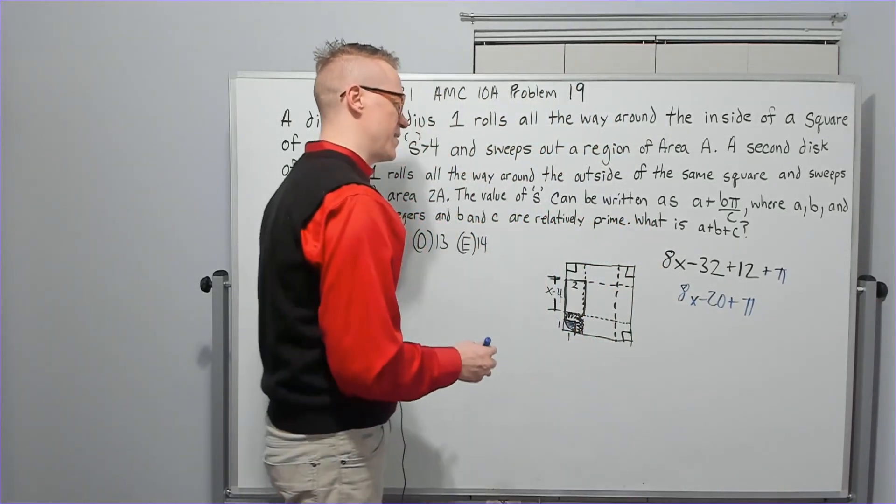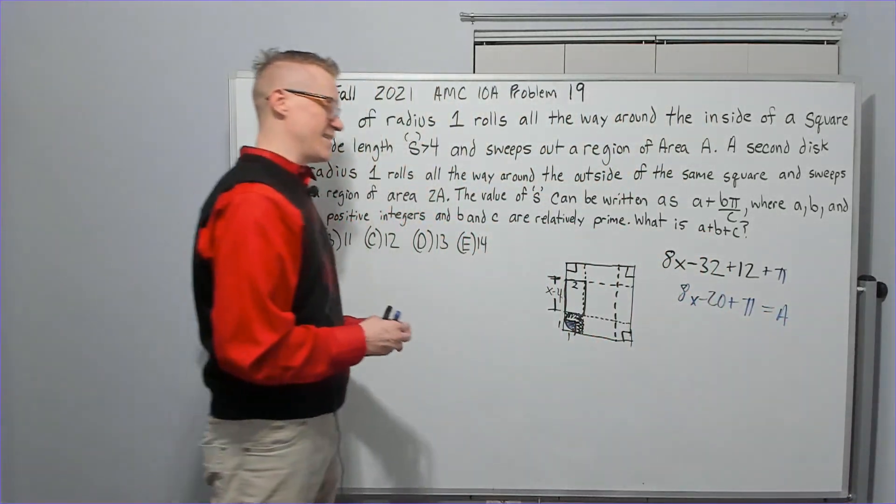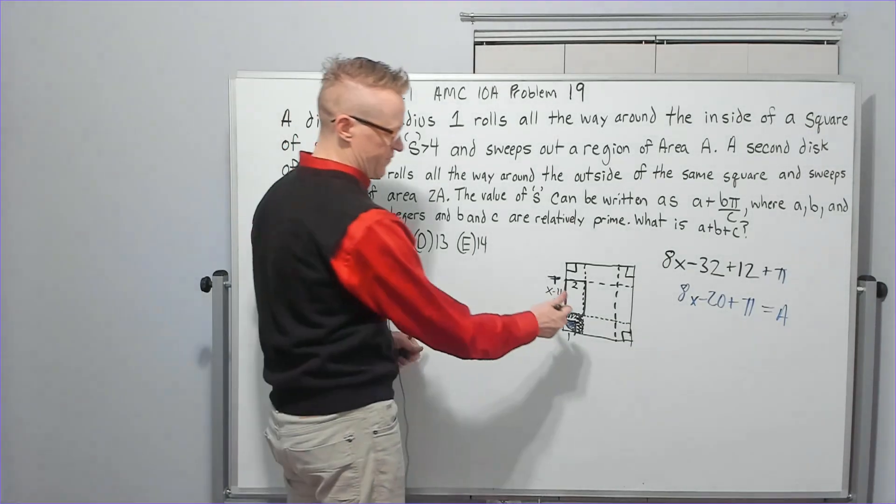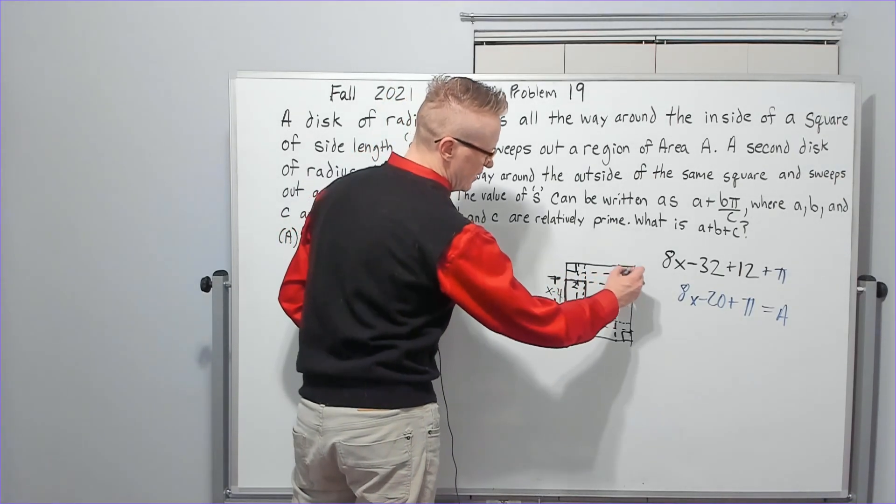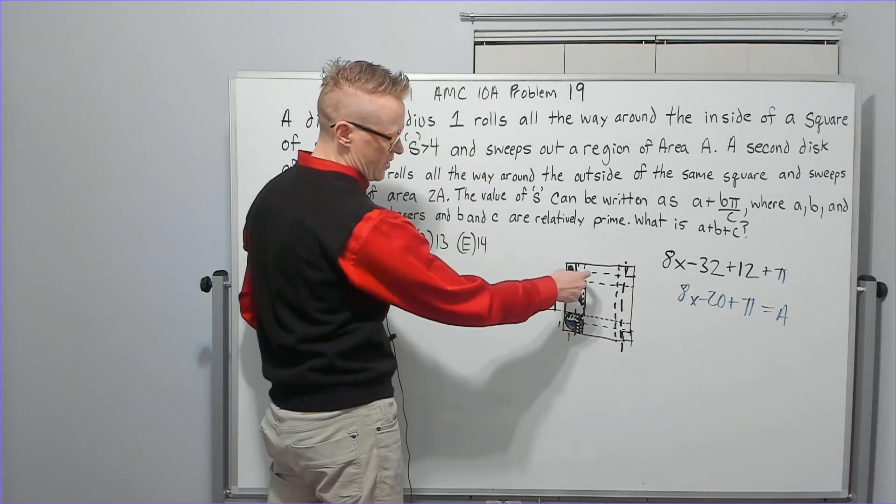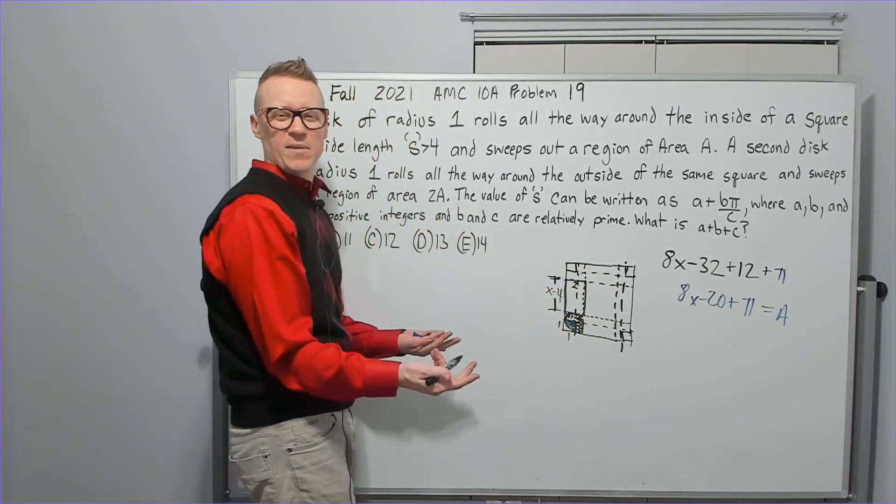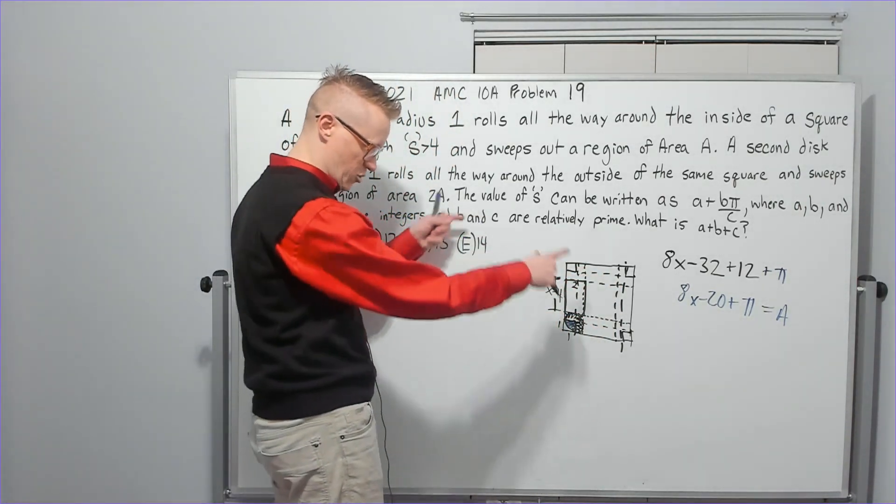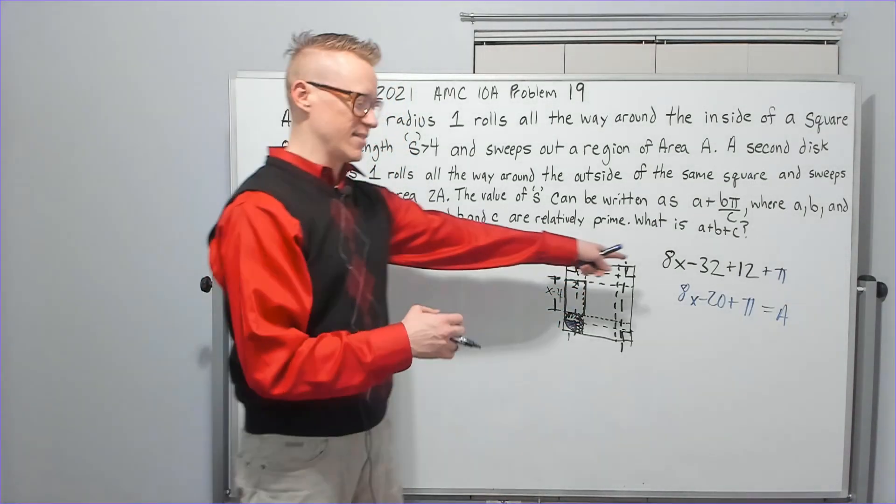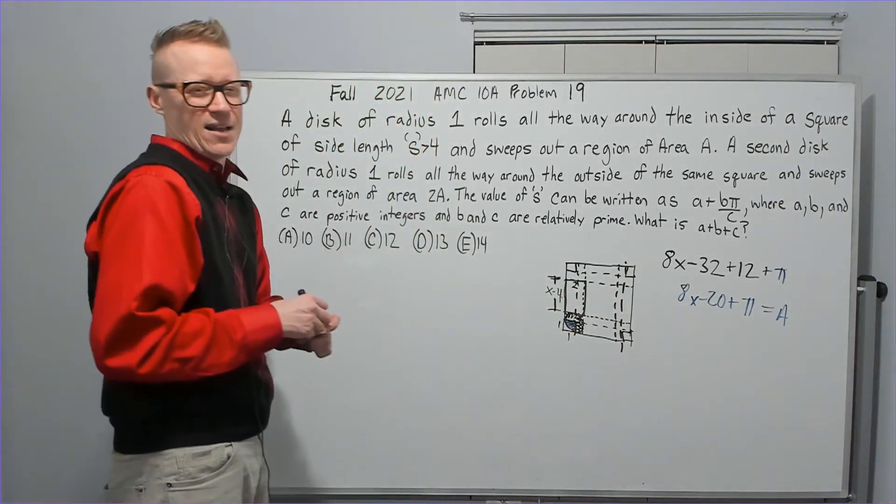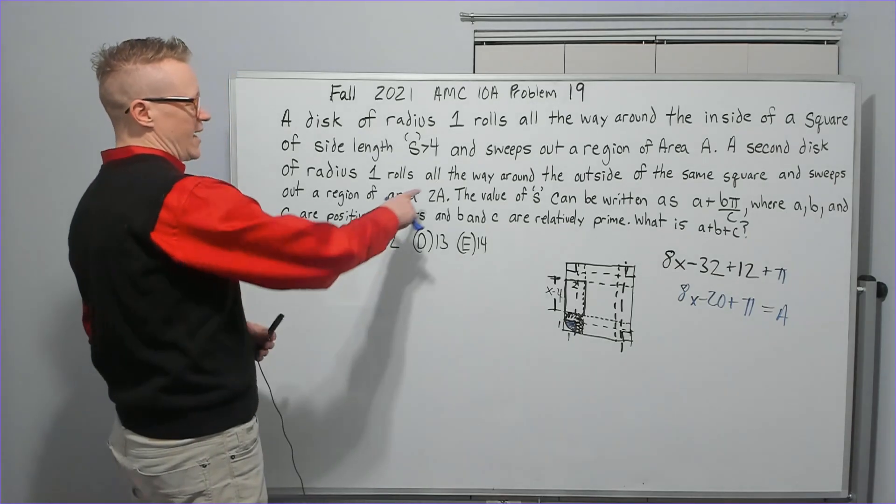And that's going to give you 8x minus 20 plus π. Okay, then that's going to have to equal A. I did it differently the first time. I actually cut it off at the center and considered this square here. And for that square there, it's like you wanted this region here, which would be x minus 2 squared, meaning the square minus the inner square of x minus 4 squared. And it's going to work out to the exact same value, but then just live solving it now I decided to do it a little bit differently.